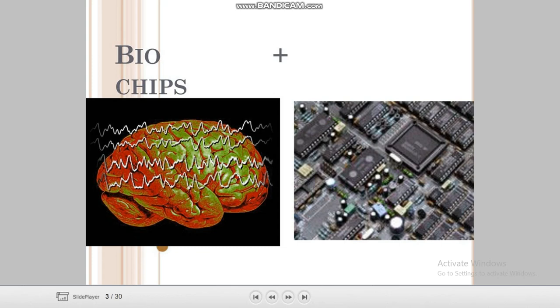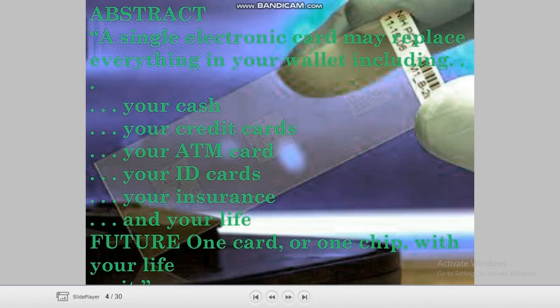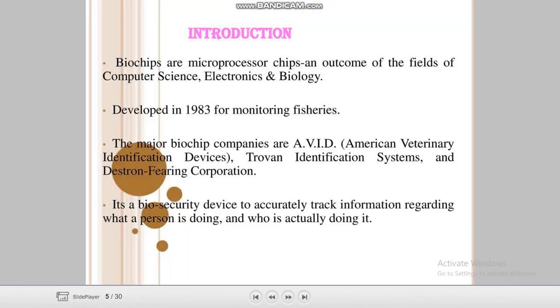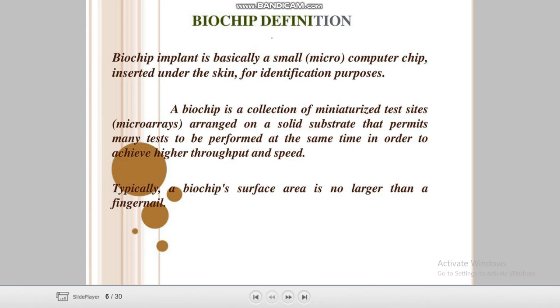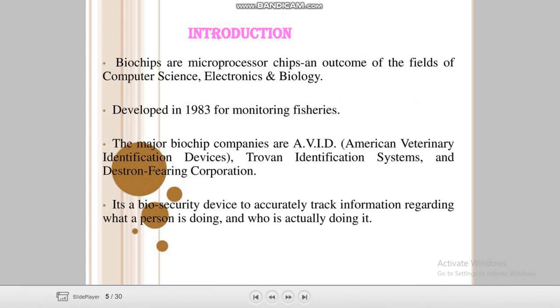First, you can see the chip which is shown in the brain. Regarding the biochip abstract: a single electronic card may replace everything in your wallet, including your cards. Introduction — a biochip is a microprocessor chip and an outcome of the field of computer science, electronics, and biology.